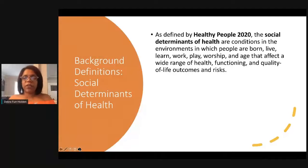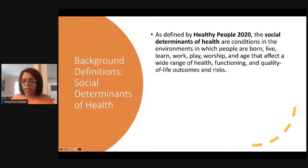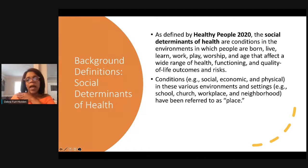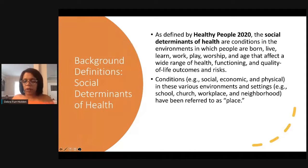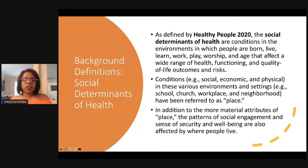The last foundational definition is social determinants of health. As defined by Healthy People 2020, these are the conditions and the environment in which people are born, live, learn, work, play, worship, and age, and how those conditions affect a wide range of health, functioning, quality of life outcomes, and risk. In these various environments and settings — school, church, workplace, neighborhood — we call these things place. And we all know that place matters. There are also material attributes of place, like patterns of social engagement, sense of security, well-being, and belonging.